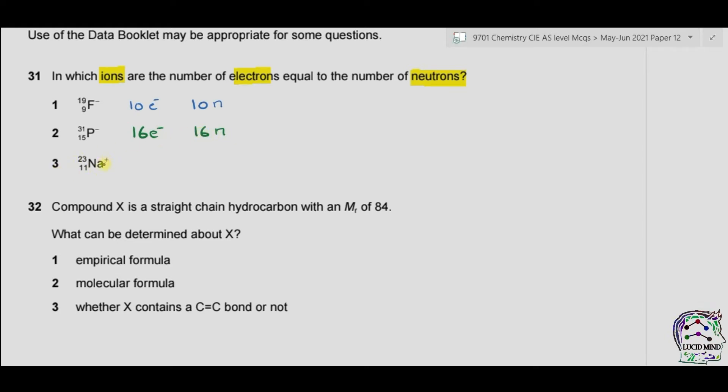Part 3, we have sodium positive, so 1 electron is lost, 11 minus 1 will become 10 electrons. 23 minus 11 gives 12 neutrons. As electrons and neutrons are equal in first and second one, therefore answer is B.